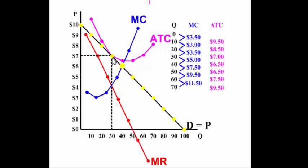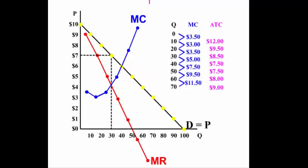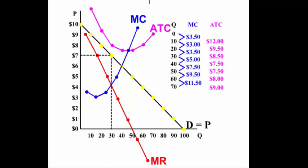Let's see if the monopolist is allocatively inefficient when the firm is earning a loss. Even when earning a loss, allocative efficiency occurs at P equals MC, and the firm is operating to the left of that point. So whether the firm is earning a loss, breaking even, or earning a profit, it is allocatively inefficient.